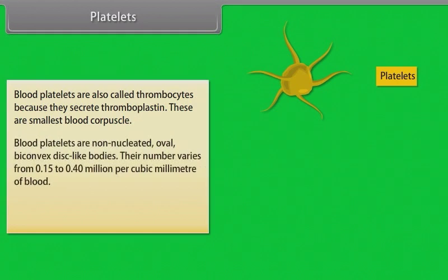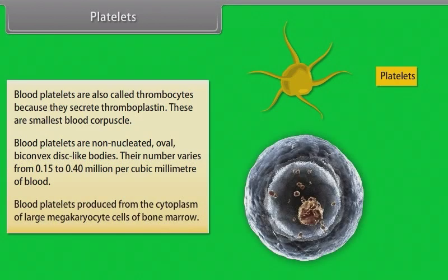Blood platelets are also called thrombocytes because they secrete thromboplastin. These are the smallest blood corpuscles. Blood platelets are non-nucleated, oval, biconvex disc-like bodies. Their number varies from 0.15 to 0.40 million per cubic millimeter of blood. Blood platelets are produced from the cytoplasm of large megakaryocyte cells of bone marrow.